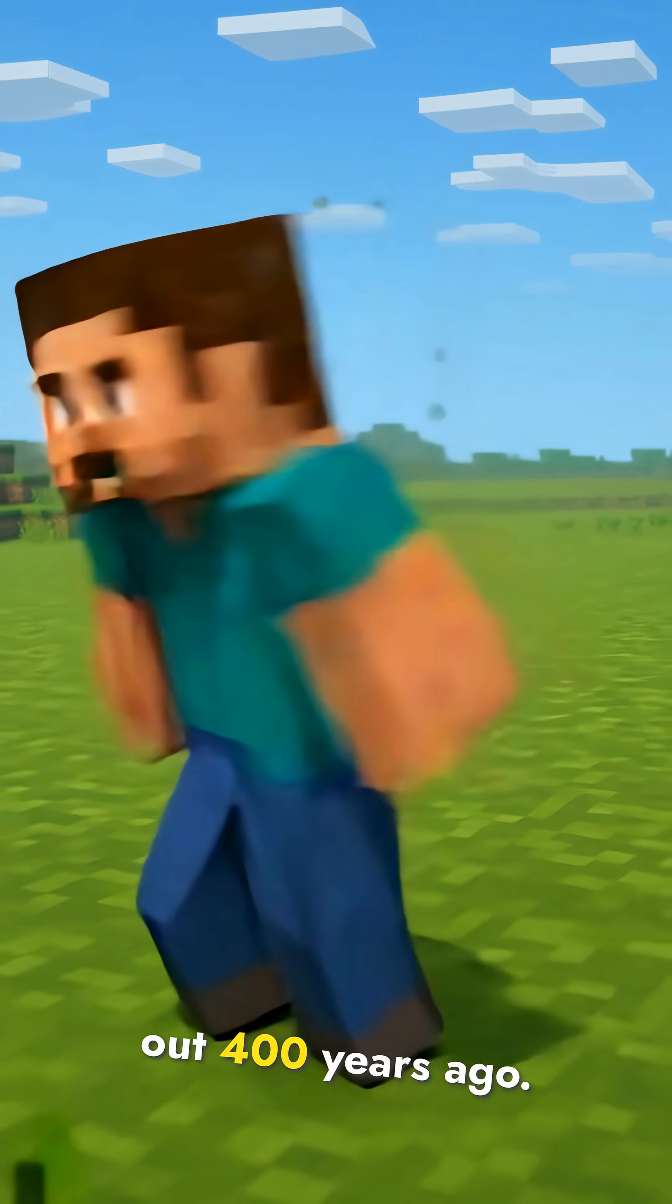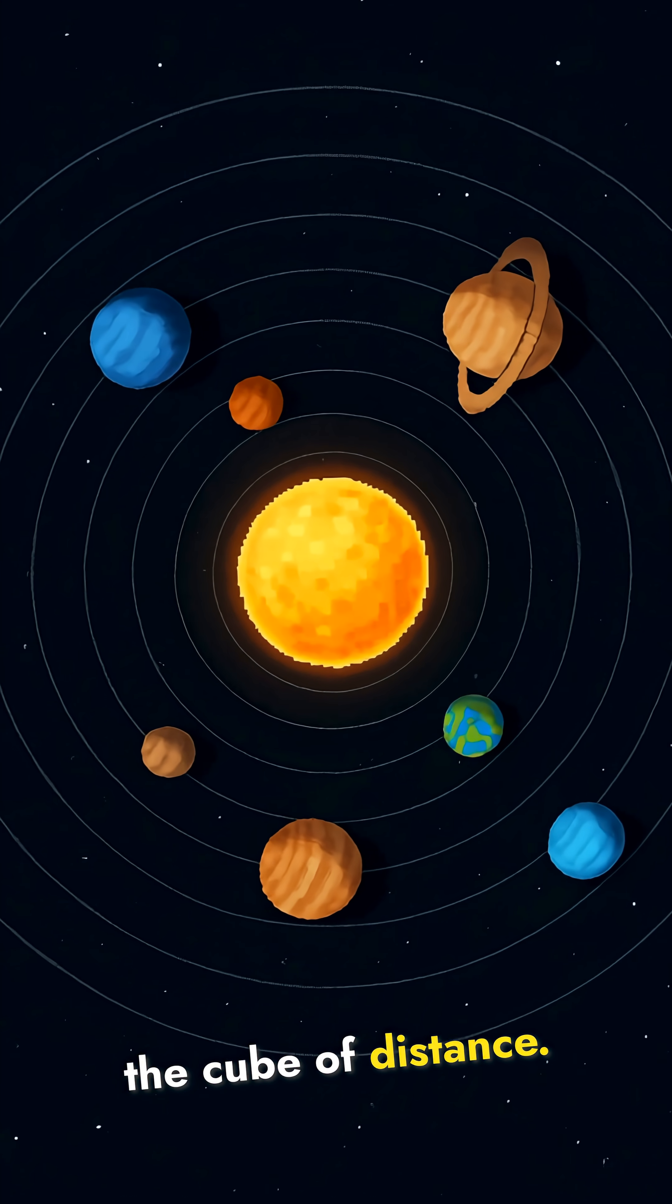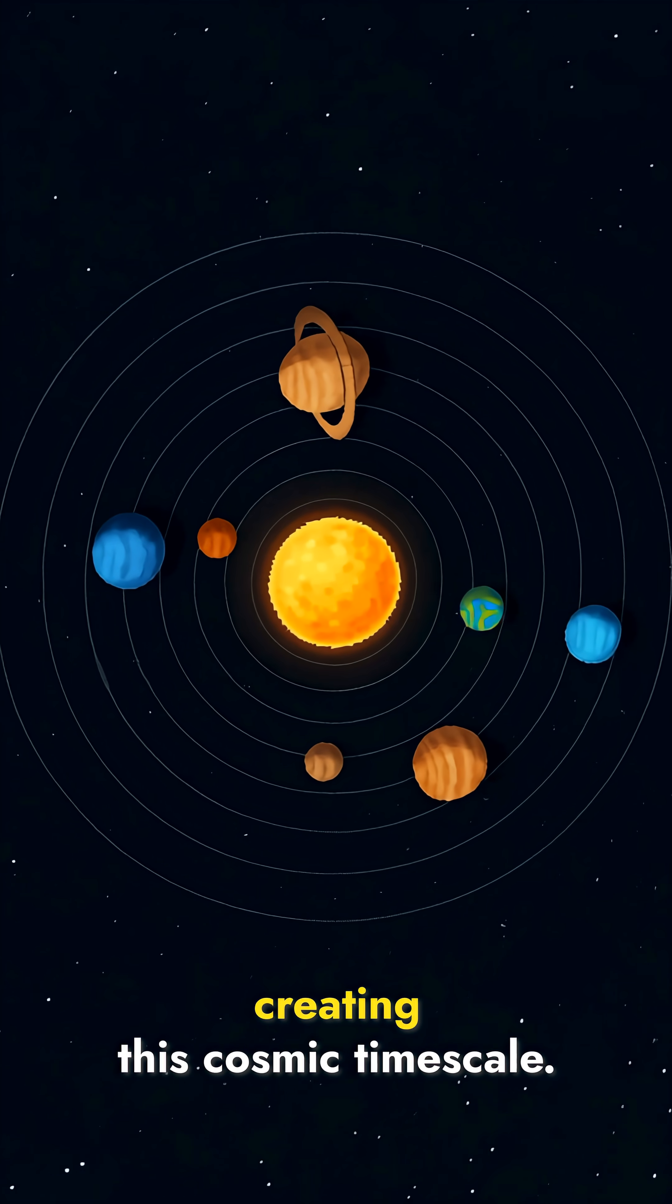Kepler figured this out 400 years ago. Orbital period increases with the cube of distance. Every planet follows the same rule, creating this cosmic timescale.